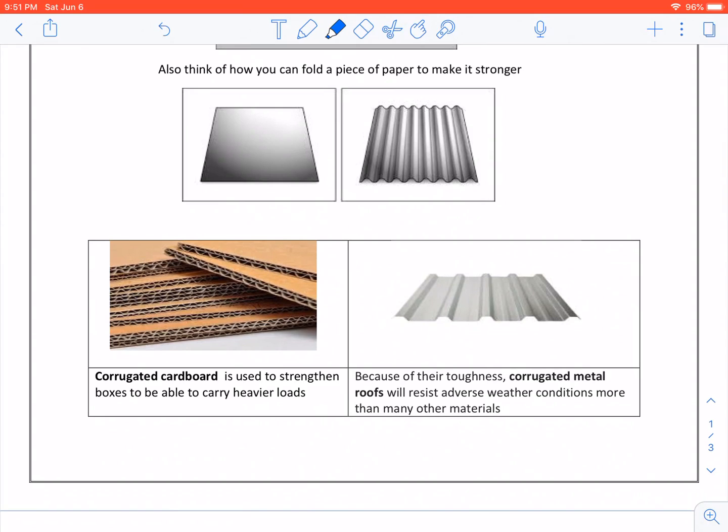Also think of how you can fold a piece of paper to make it stronger. A flat piece of paper will not be able to carry a book, but a folded piece of paper will be able to do that. That is how they strengthen cardboard boxes. Corrugated cardboard is used to strengthen boxes to be able to carry heavier loads. Because of their toughness, corrugated metal roofs will resist adverse weather conditions more than many other materials.